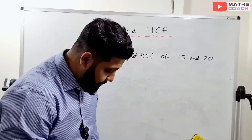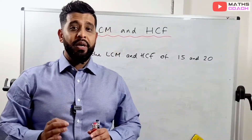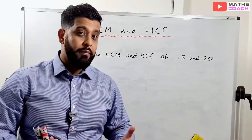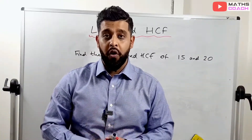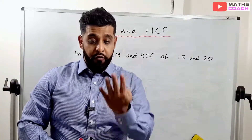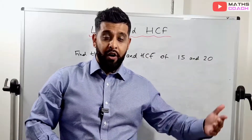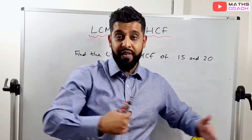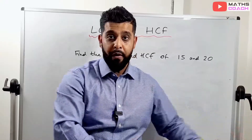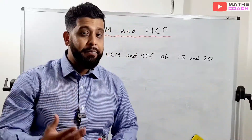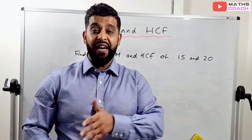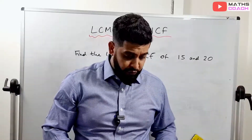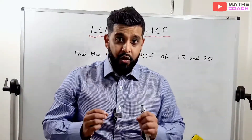Write this down. A multiple is the times table of a number. For example, the multiples of 4 are 4, 8, 12, 16, 20, and so on — these are the times table of 4. The multiples of 5 are 5, 10, 15, 20, 25, 30, and so on.